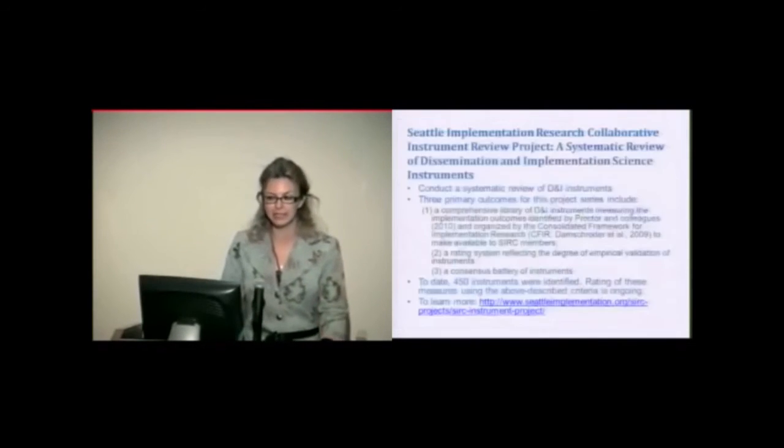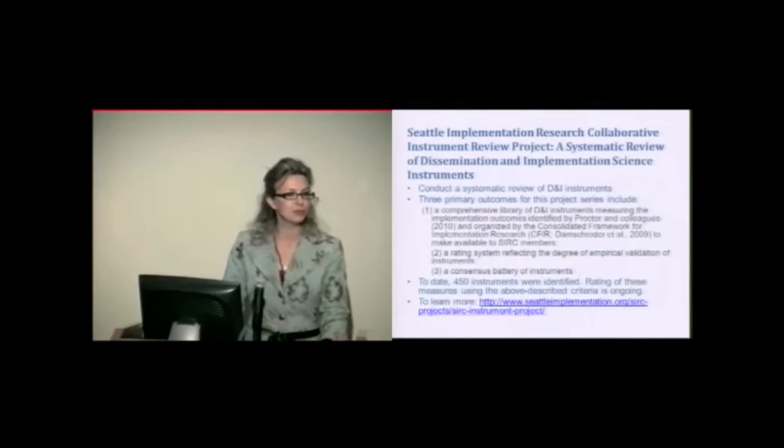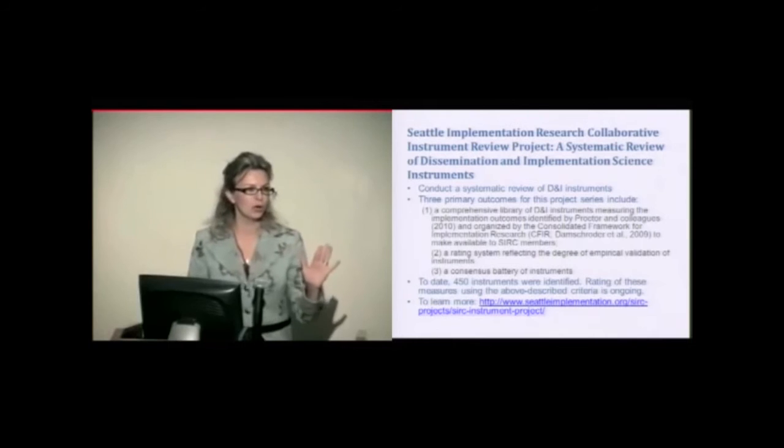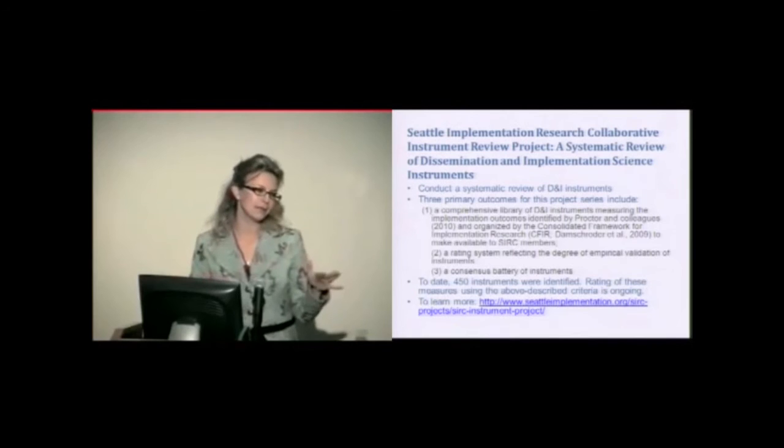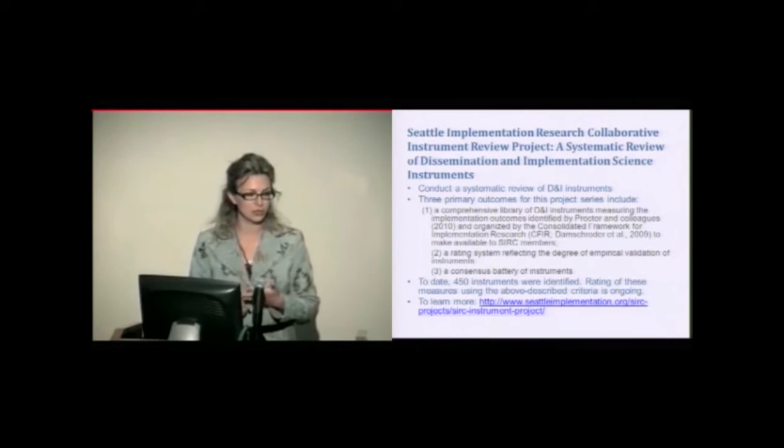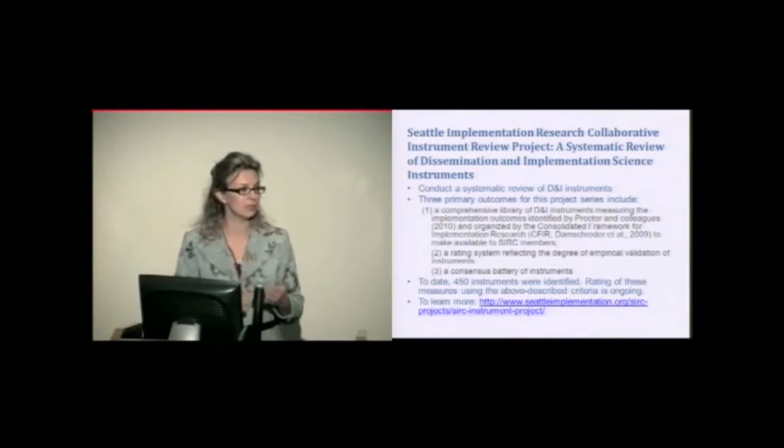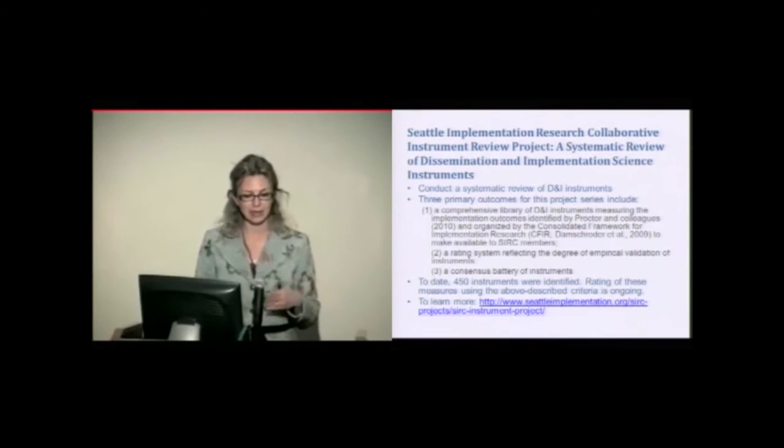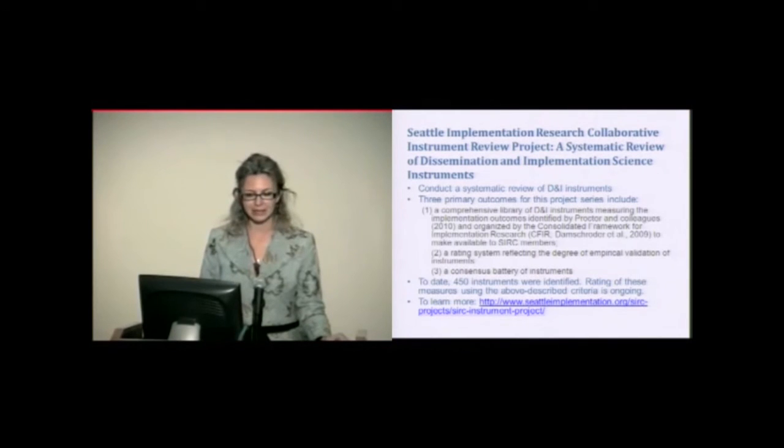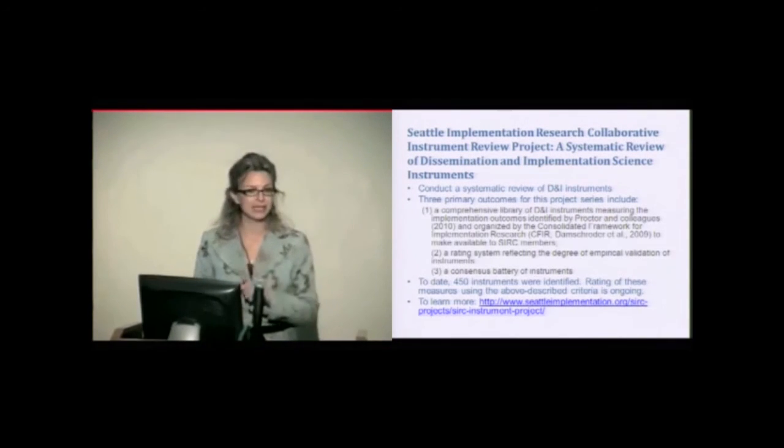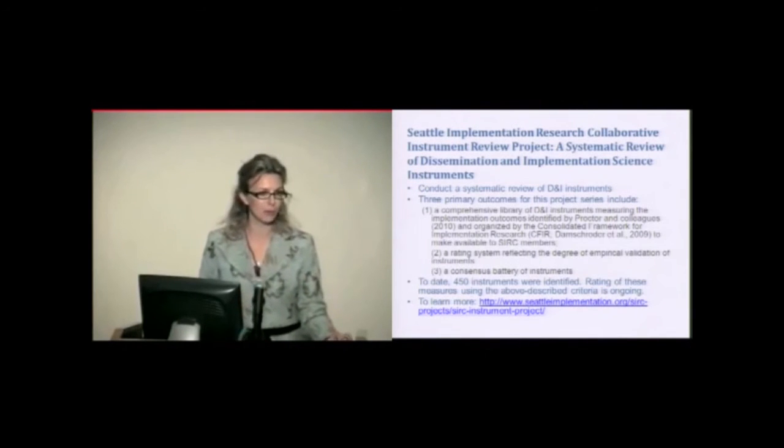The first one is the Seattle Implementation Research Collaborative. They have an instrument review project. They use a systematic approach of identifying instruments, and they are trying to reach across different topic areas and disciplines. They have developed a rigorous rating criteria to rate these measures. They are in the process of doing that. And they are going to make these available on their website as a repository. And eventually they are going to make some recommendations based on a consensus approach. They have currently 450 instruments, and they are in the process of rating. Please look at their website, keep looking at it. And within a year they are going to make them available. They are going to have publications coming out on the process in the coming few months.